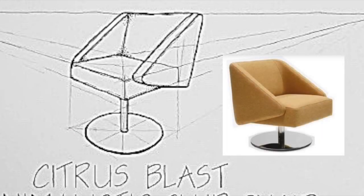Note that he did the correct thing with the top of the back of the chair — it's directly on the eye level, and he didn't give in to the temptation to put some sort of angle there. On the eye level, things become a straight line. Let's keep moving.